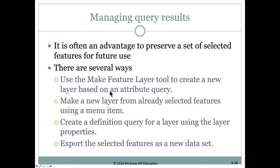Once we've selected different results, it's often advantageous to save or preserve the set of selected features for use elsewhere. There are several ways to do this: we can make a feature layer, make a new layer, create a definition query, or export the selected features as a new dataset — which is typically what I use. For example, if we've selected the state of Oregon from the states layer, we export it as a new dataset and give it a name like 'Oregon.'